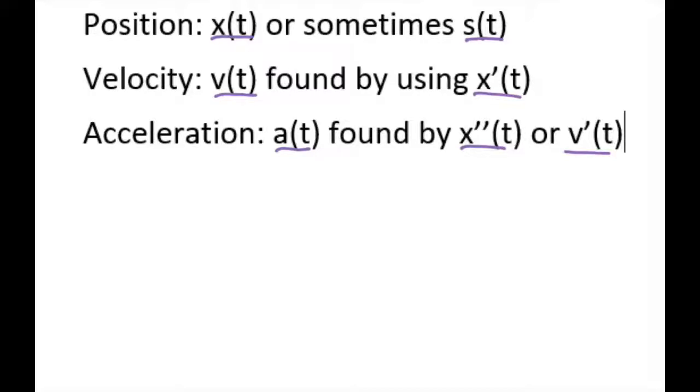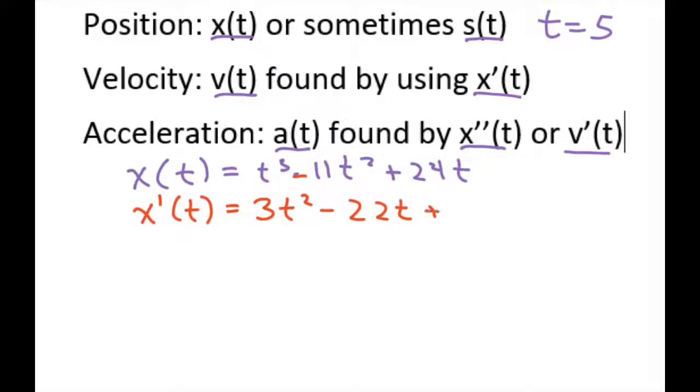So basically we're just going to evaluate at t equals 5. The first thing we want to do is take our equation. So it is x of t equals t cubed minus 11t squared plus 24t. Now we need to find the derivative. So x prime of t equals 3t squared minus 22t plus 24. This is your velocity of t.